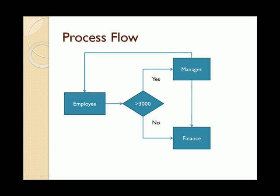This is a sample workflow for the problem statement. The employee submits a claim through the application. If the submitted claim amount is greater than 3000, the application forwards the claim to the reporting manager for approval; otherwise it goes to the finance department for payout. The manager can either approve or reject the claim. If approved, it goes to finance for payout; if rejected, it is sent back to the employee for modifications.